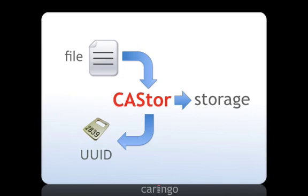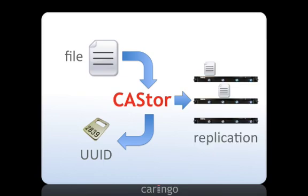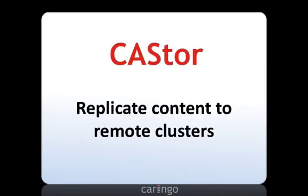Caster protects against data loss by using content replication. Caster creates exact replicas or copies of each file stored in the cluster. Each replica is stored on a different node within the cluster to ensure that if a node fails, another replica will always be accessible. Content can also be replicated to remote clusters for disaster recovery and business continuance purposes.